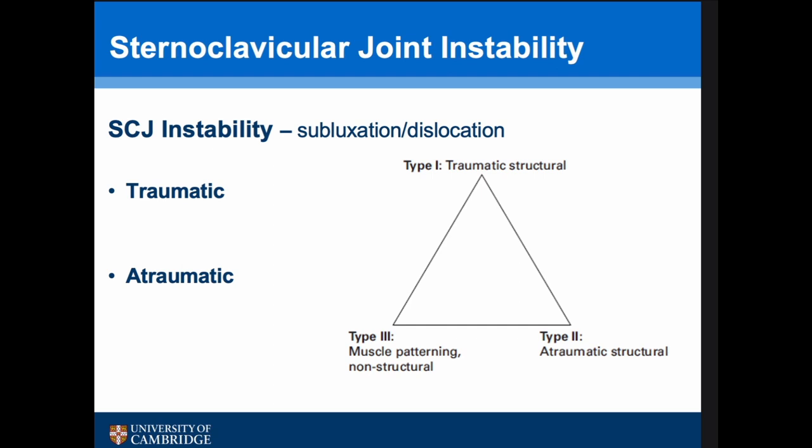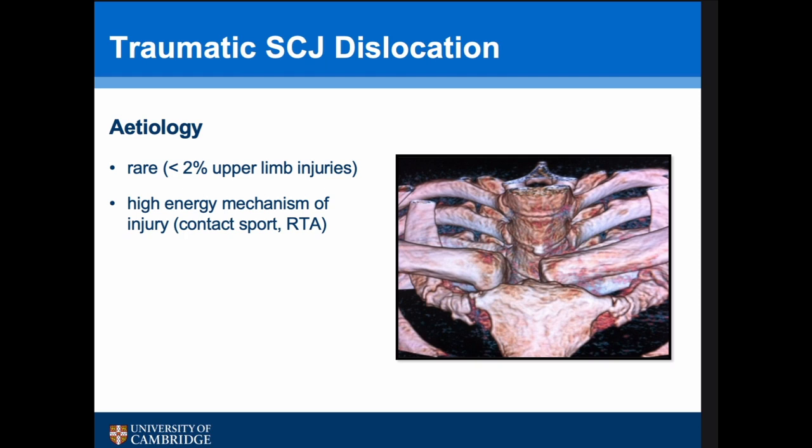Traumatic SCJ dislocations are very rare, accounting for less than 2% of upper limb injuries. They tend to involve a very high mechanism of injury and are related to contact sports and road traffic accidents — motorcycling, falling off horses, and similar events.